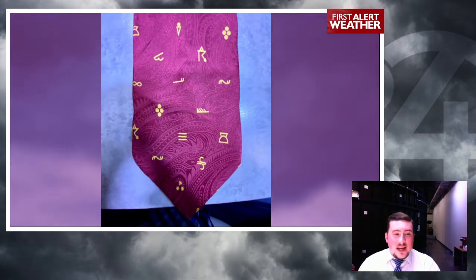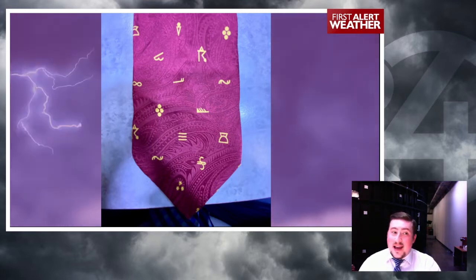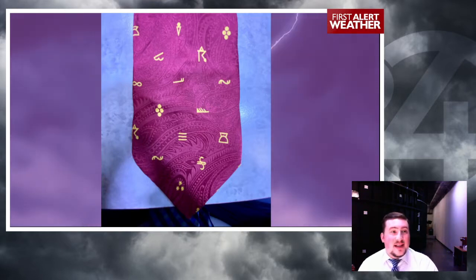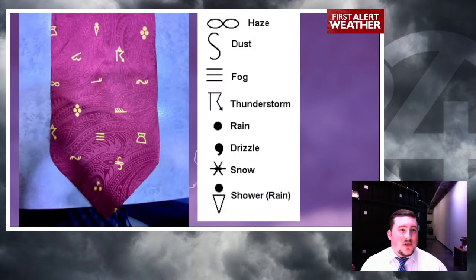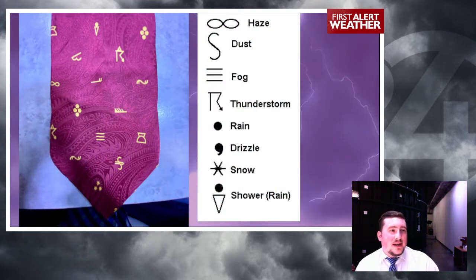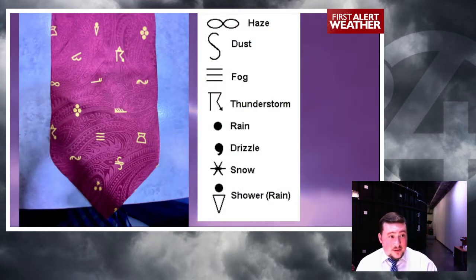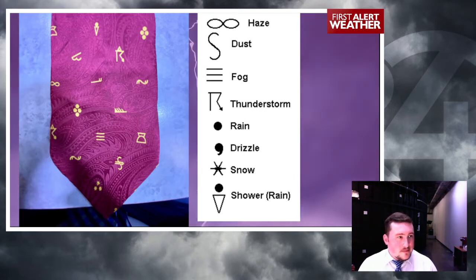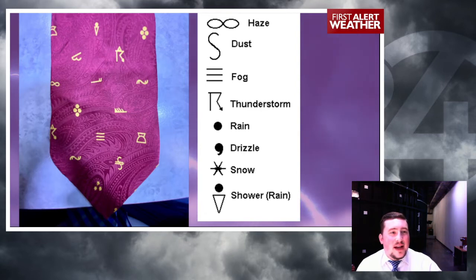These weather symbols are still in use today at every weather station and basically every airport across this country. Why airports? I'll talk about that in a minute. But let's decode some of the symbols on my tie. This section here is everything that's involved. So you can see on the far side, we've got that figure eight — that represents haze.